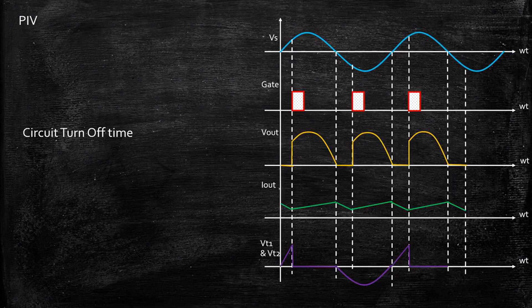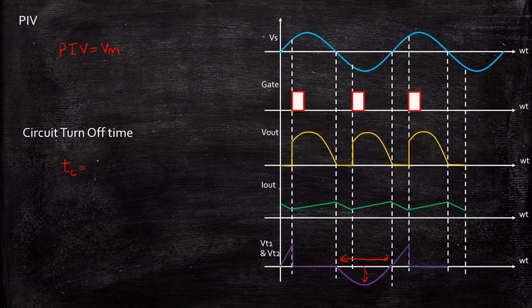The peak inverse voltage is the maximum negative voltage appearing across the thyristors. According to the fundamental definition, the maximum peak inverse voltage is Vm. For the circuit turnoff time, this is the duration during which the thyristors are turned off. Considering the instant at pi/ω, that interval represents the circuit turnoff time.